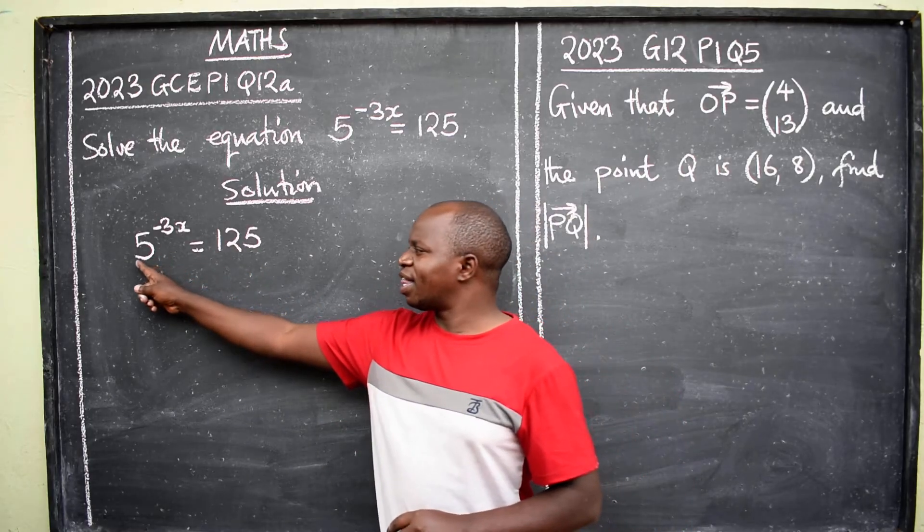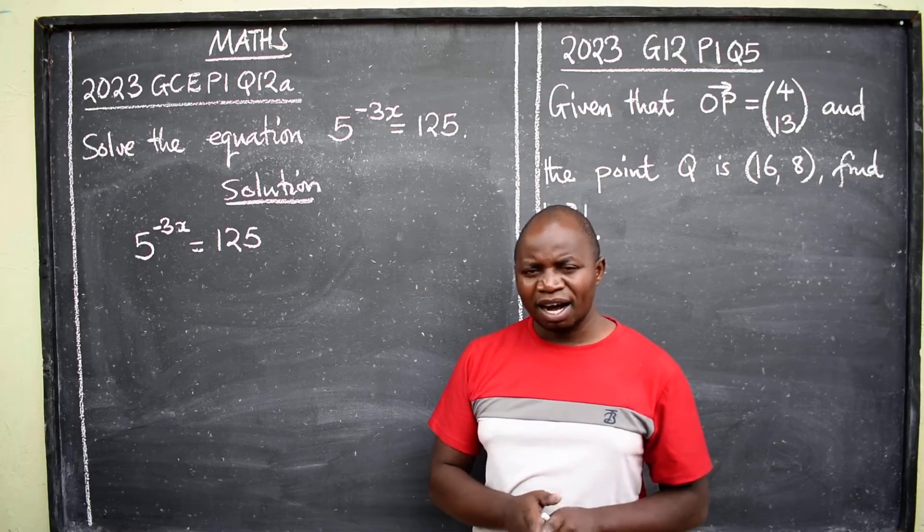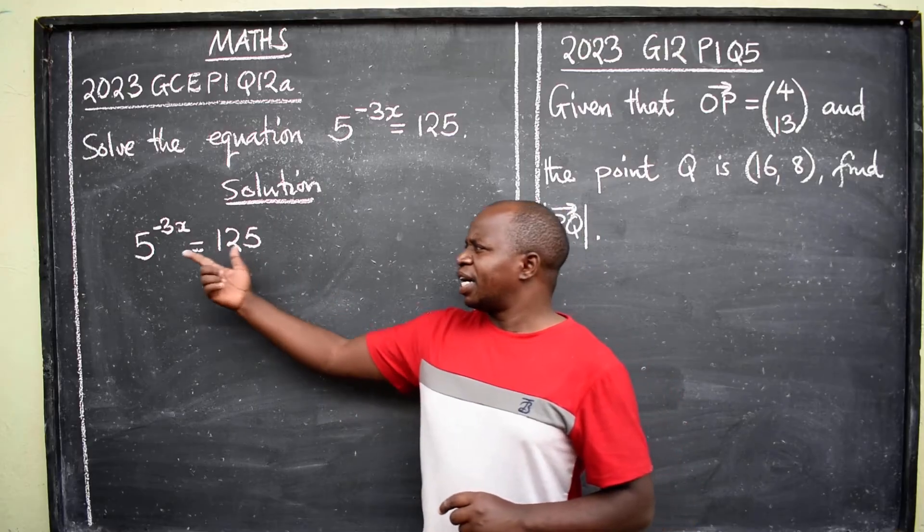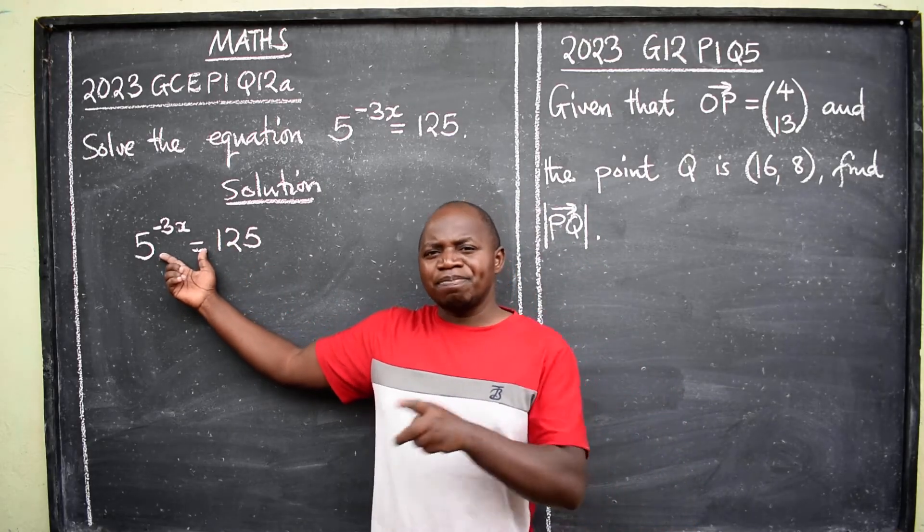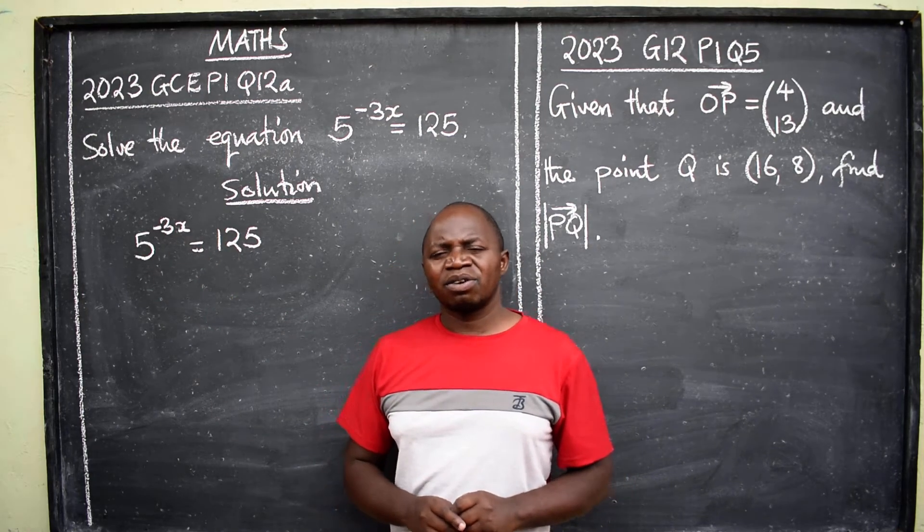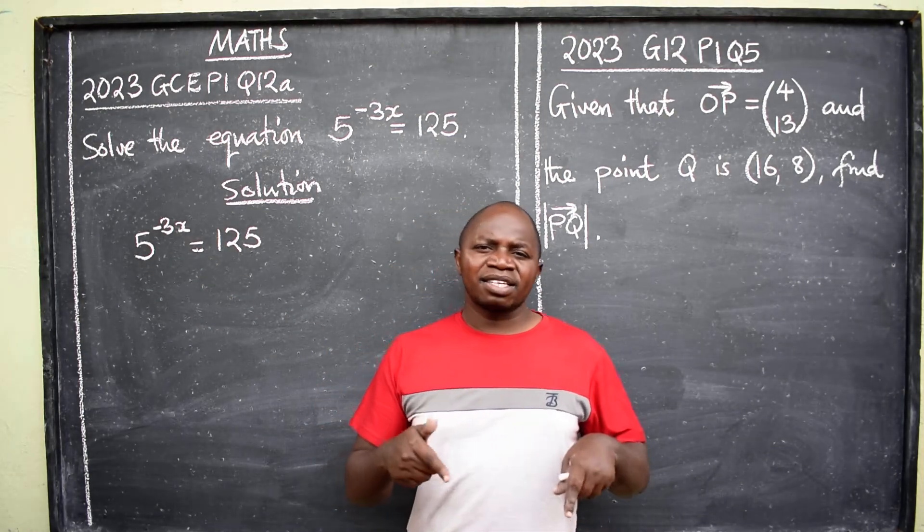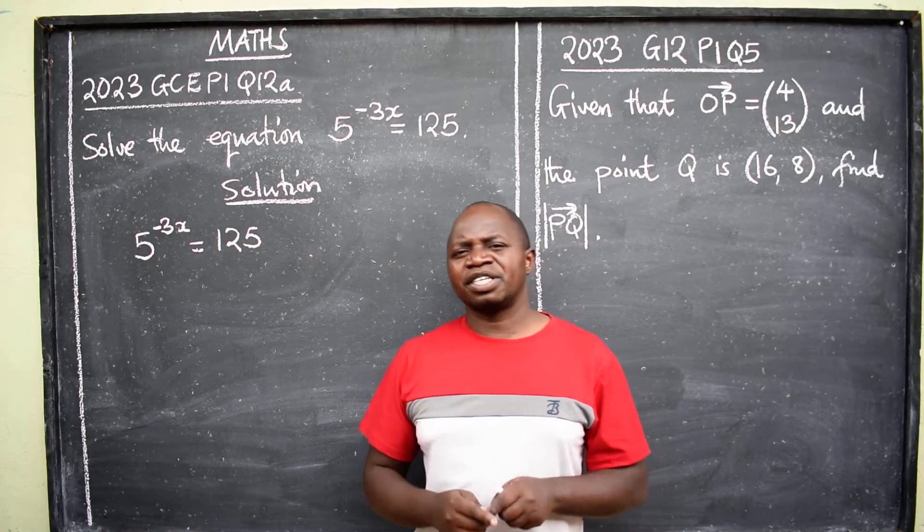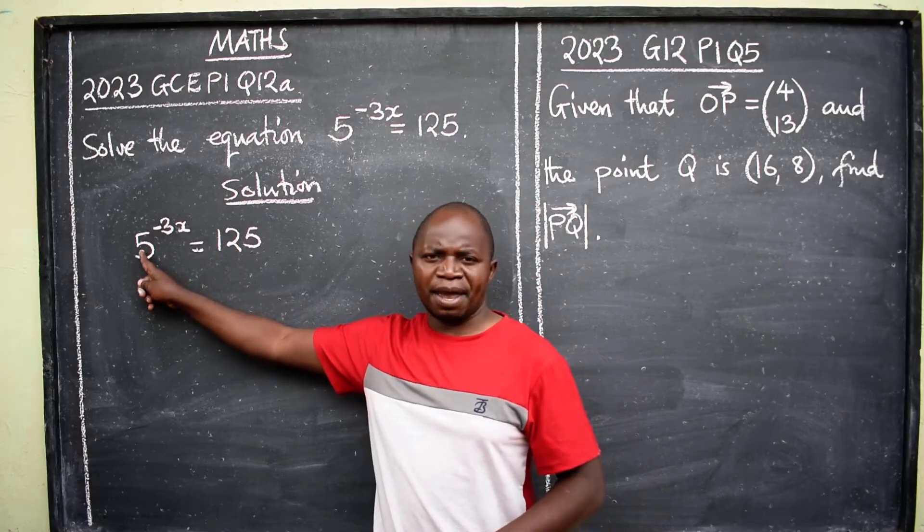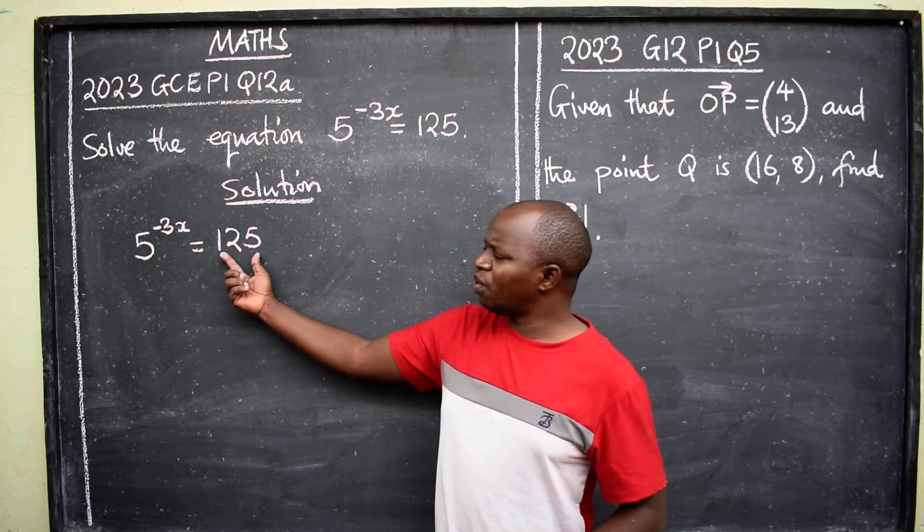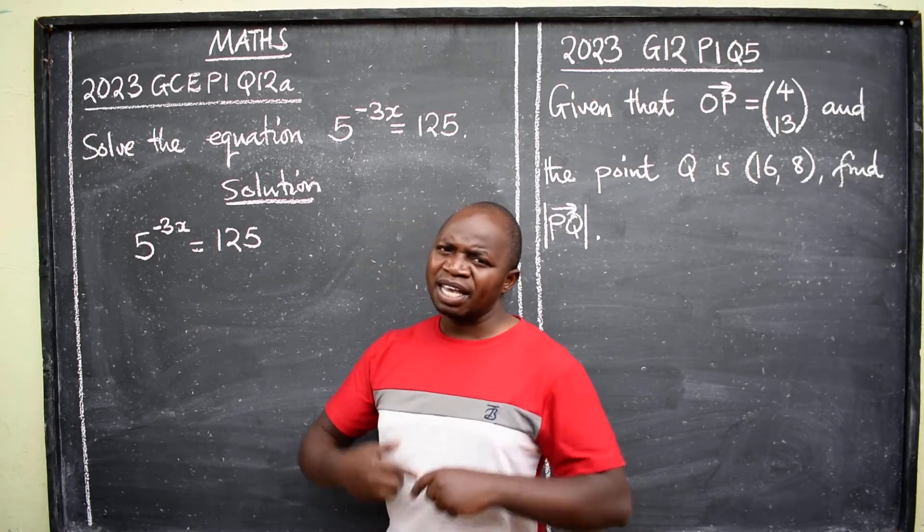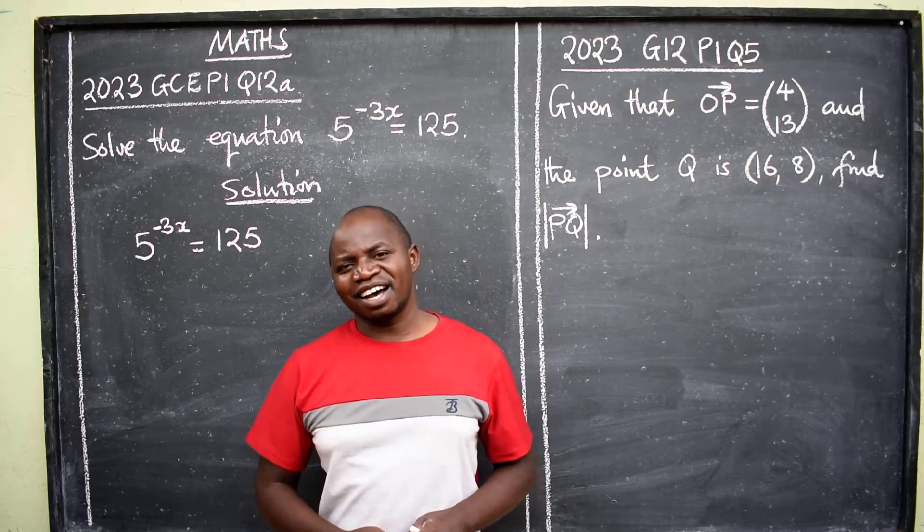Making sure that the bases on both sides are the same, that is the first method. If the given equation cannot be expressed in that form, if you can't make both sides or bases the same, then the next method will be used, which is substitution. In this case, I have 5 here as the base.